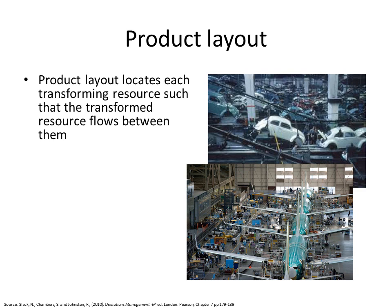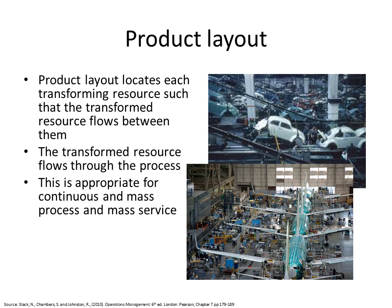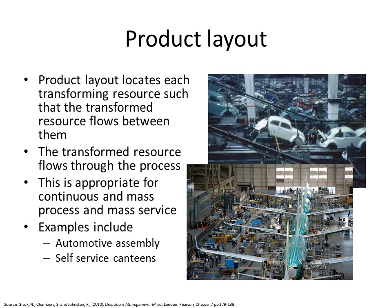Product layout locates each transforming resource such that the transformed resource flows between them. It's often called line layout or flow layout because the transformed resource flows through the process. It's appropriate for continuous and mass processes and mass services — examples include automotive assembly and self-service canteens.